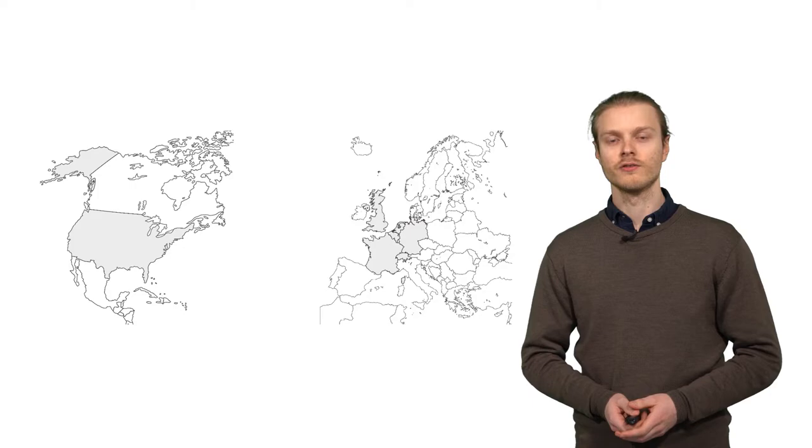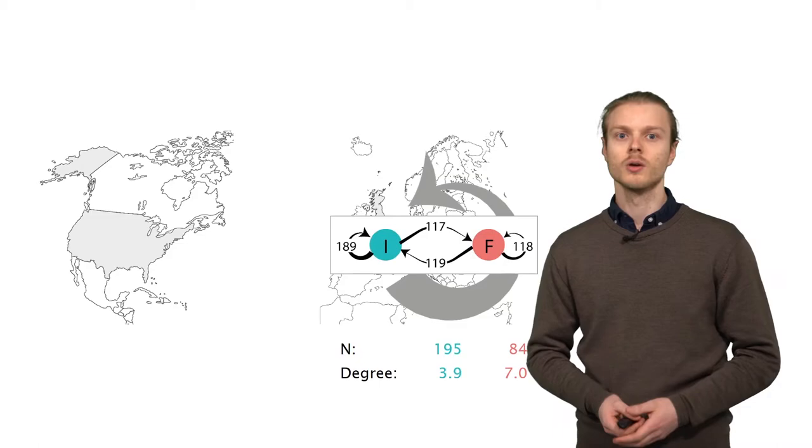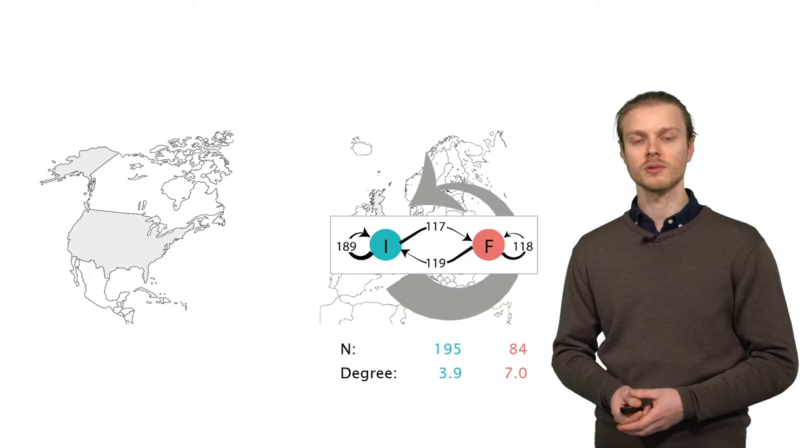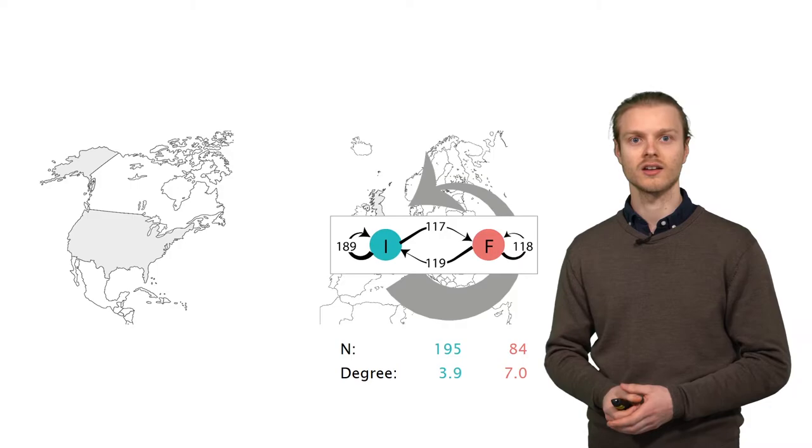Focusing now at the two corporate regions of Central Europe and North America, and starting with Europe, we can see that within Europe, exchange is very balanced among informal and formal scouts, where the relatively larger number of informal scouts is offset by higher network activity of formal scouts, as measured by their degree centrality.